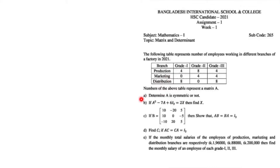Moving to question B, we have to determine A² - 7A + 6I₃, where I is the identity matrix of order 3×3, and this equals a given expression 2X, and we have to find the unknown X. To find A², I multiply A with A. To find 7A, I multiply 7 with matrix A.